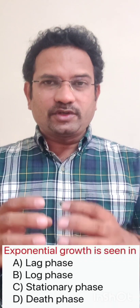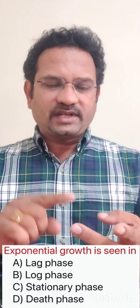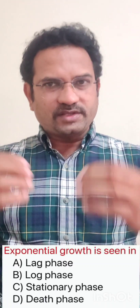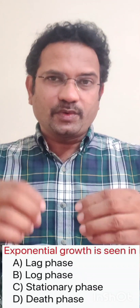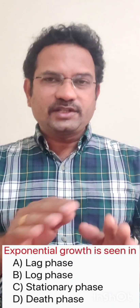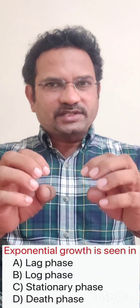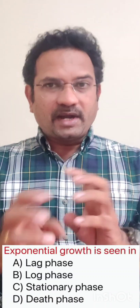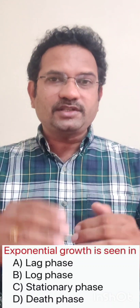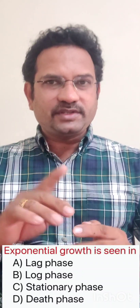Exponential growth of bacteria is seen in which phase? Options given are log phase, lag phase, stationary phase, death phase. Whenever bacteria causes infection or is grown in a nutrient broth, initially growth will not be there — that is called the lag phase, because bacteria need time to utilize the nutrients. Once it starts utilizing the nutrient, it multiplies rapidly with exponential growth. That is called the log phase.